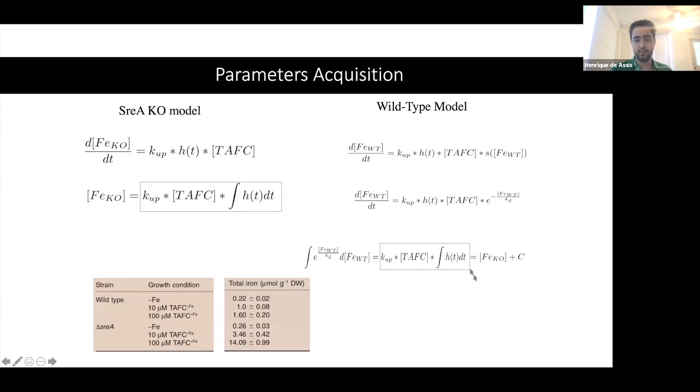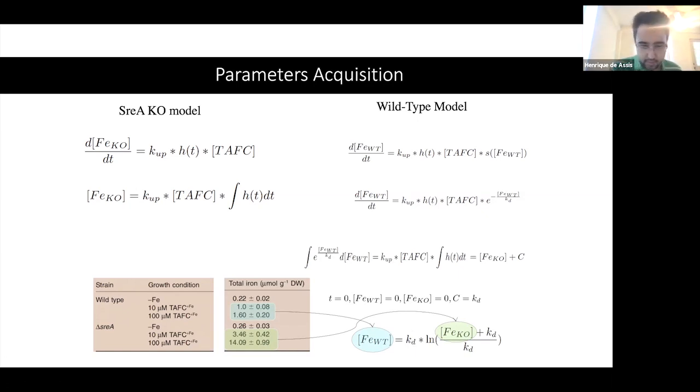Then I can do some rearrangements. Now something interesting happens because these two are equal, and then I can substitute here. I have a C integration constant which I can find to be the KD. There's another supposition I made that the initial quantity of iron in the colonies is negligible. It's actually not zero, I know it's not zero, but I'm assuming it's negligible. And I think this is a reasonable supposition. Then I found this, and these F of WT and F of KO are known quantities from the experiment. I can find that KD I invented.